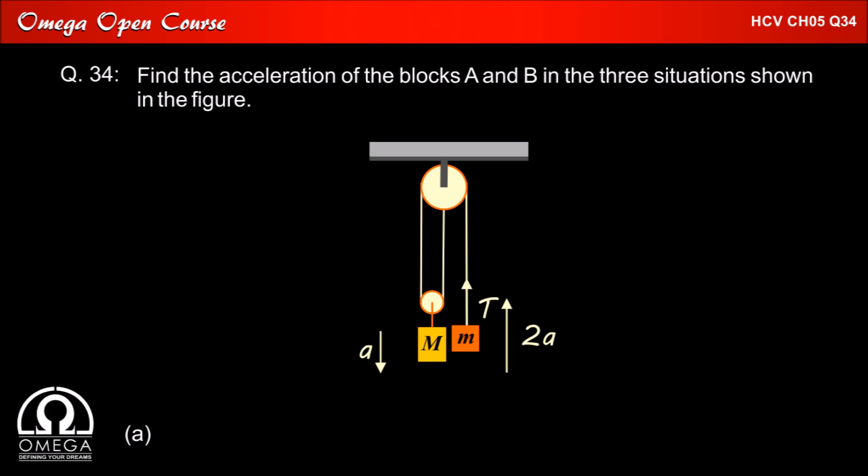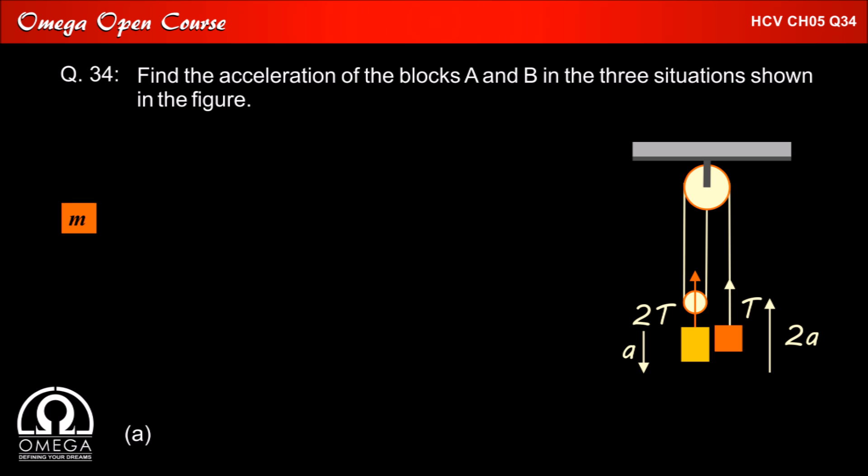Now suppose that the string supporting block A and the pulley has tension T in it. Then the pulley supporting block B must experience 2T tension in the upward direction. Since the pulley is massless, it cannot experience any net force on it. So the string pulling the pulley down must apply 2T tension on it in the downward direction, which means block B is being pulled up by tension 2T.